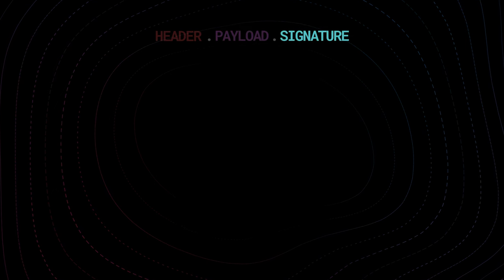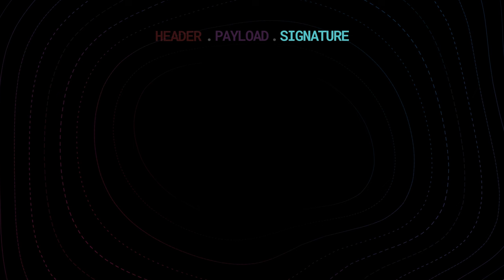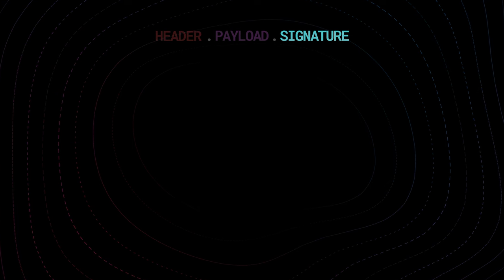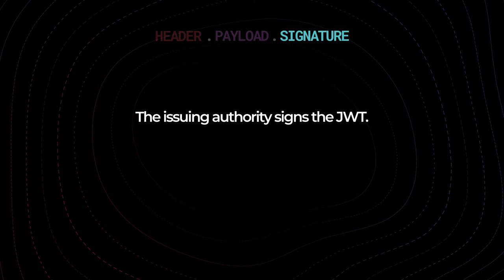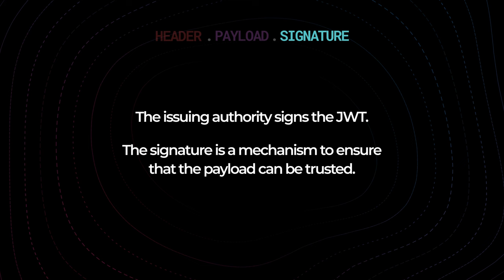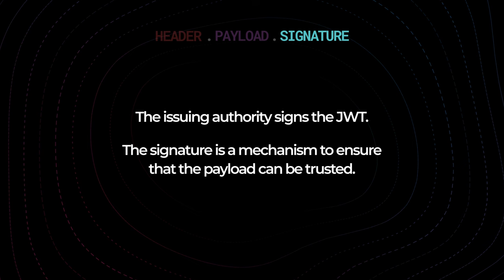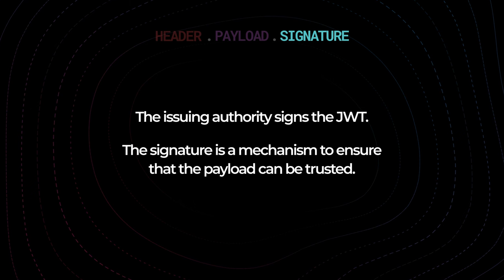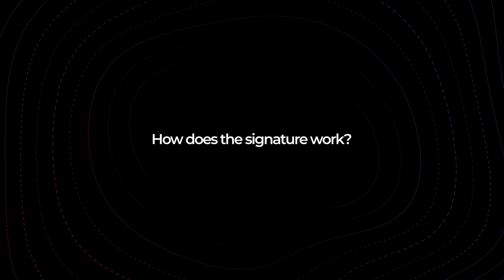If you manage to understand how signatures work, you're going to understand everything. When a JWT is issued to a user, the authenticating server needs to sign that token. What that signature means is basically: 'I'm the authority that issued this token, and the payload — like the subject, the email, the name, the organization ID, or whatever is in the token — I use this signature to guarantee that this is 100% true.'